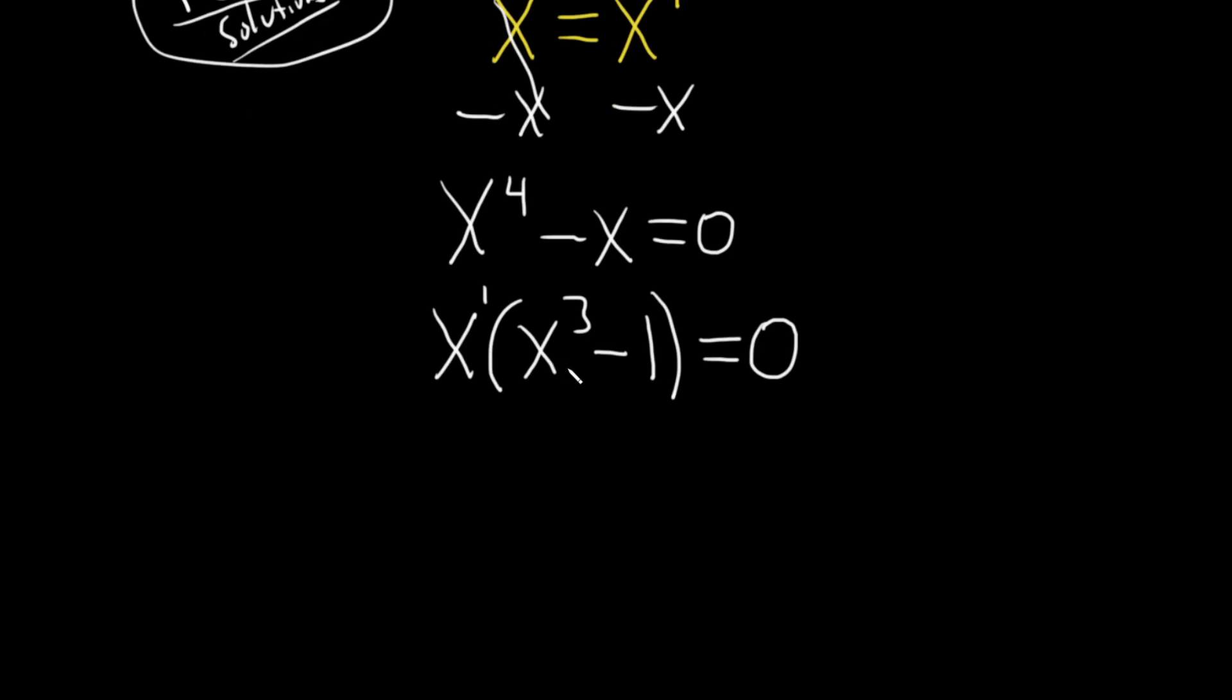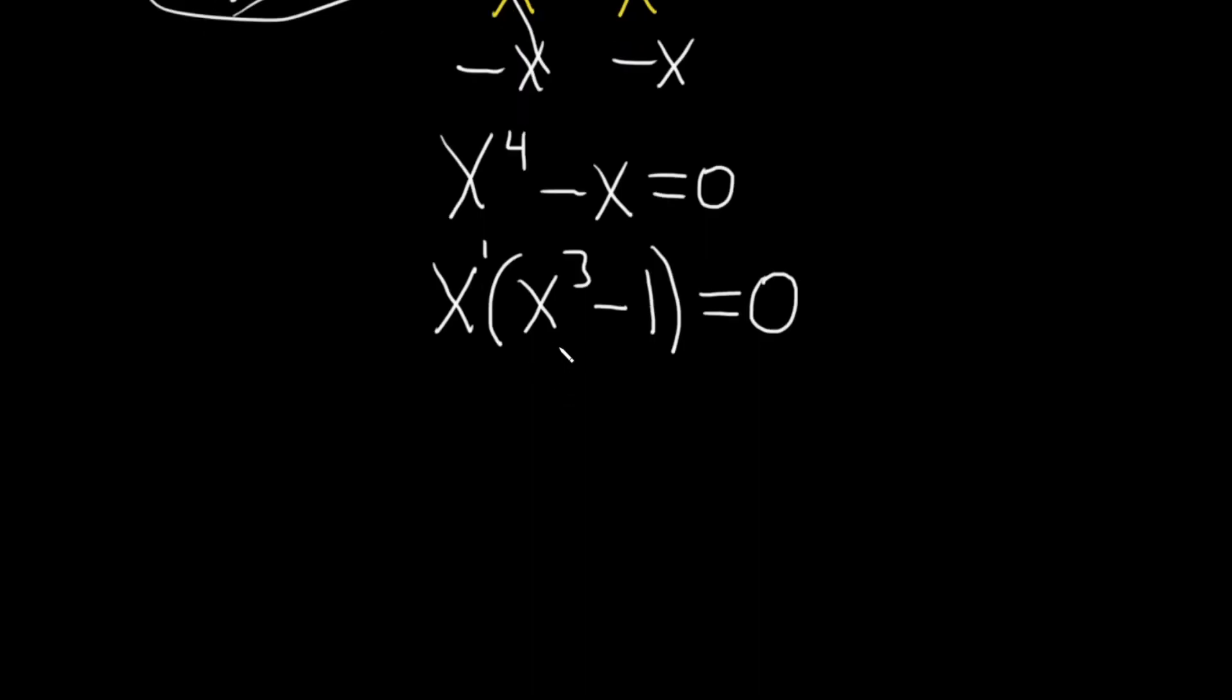Now x cubed minus 1 does factor further and it does have three solutions. But two of them are not real solutions. So we only want the real solution. So we don't have to factor this any further.